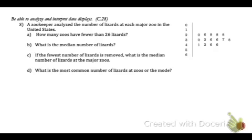Number 3 is also a concept from Unit 5. You need to be able to analyze and interpret data displays. You can see that we have a stem and leaf plot where a zookeeper analyzed the number of lizards at each major zoo in the United States. Remember that each of those numbers on the right represents a value. How many zoos have fewer than 26 lizards? Well, we can see when we start, that's where our numbers start. Our first number is 20, and then it jumps right to 26. So there is only one zoo that has fewer than 26 lizards.